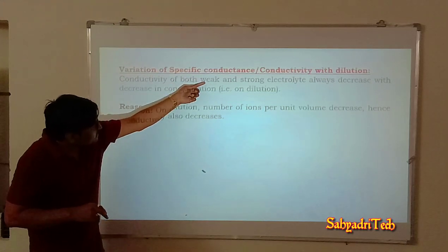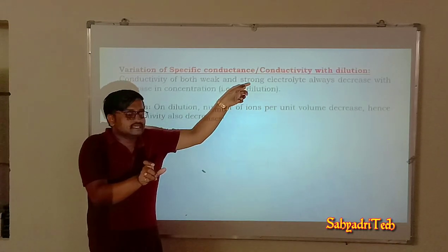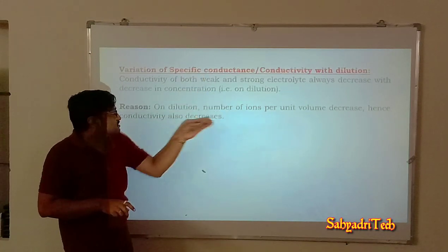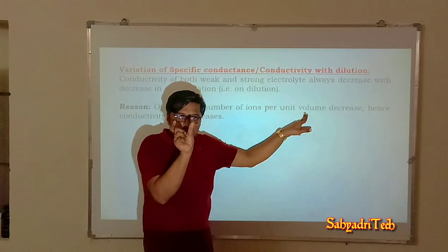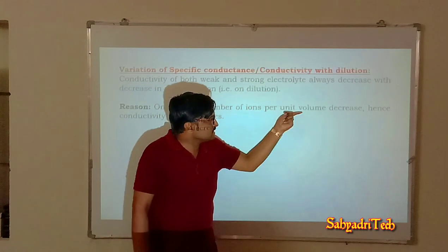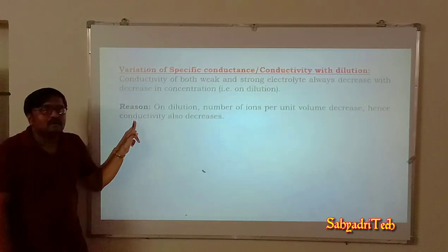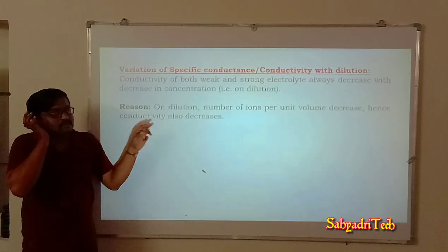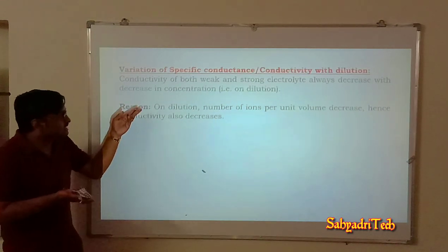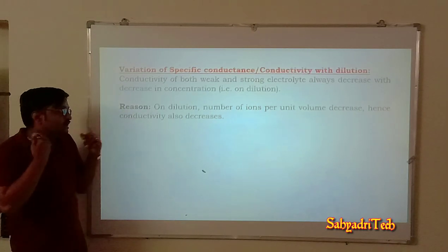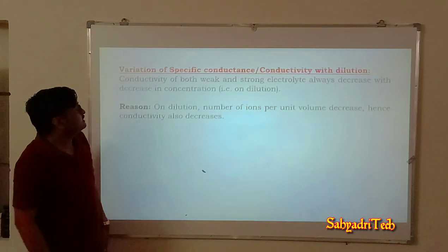Whether it is a solution of a weak electrolyte or a solution of a strong electrolyte — as the number of ions per unit area decreases, conductivity also decreases. The reason: on dilution, the number of ions per unit volume decreases, hence conductivity also decreases.